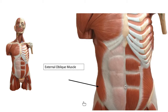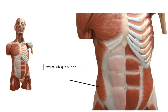Now we're looking at the external oblique muscle. External means it's the most superficial of the oblique muscles. The oblique plane goes down at an angle. I tell folks the external oblique is like putting your hands in your front pockets — as your fingers go down and in. The muscle fibers for the external oblique go inferior medially: down and in.